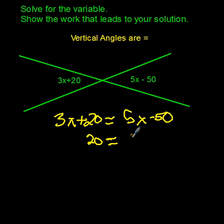So I'm going to move the 3x over first. I'm going to have 2x minus 50 on the right-hand side and 20 on the left. Then I add 50 to the other side. When I add 50, I'll get 70 equals 2x.